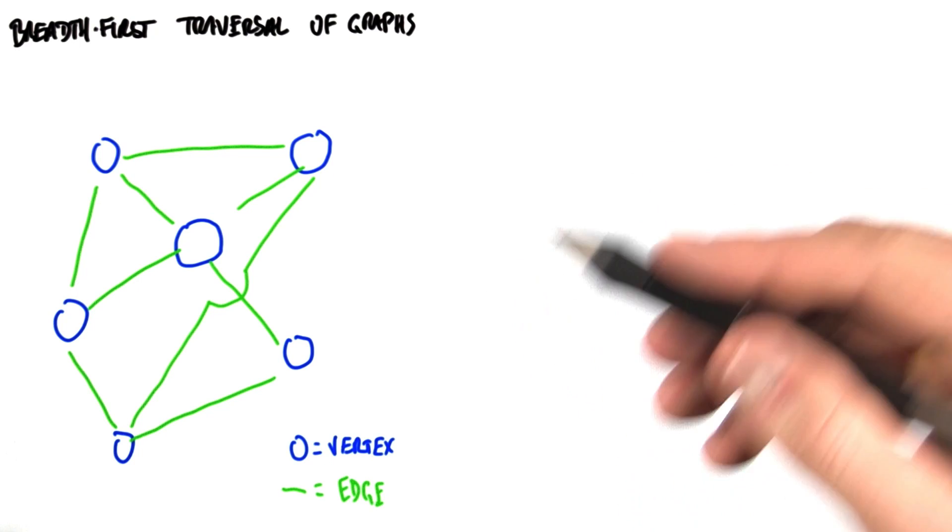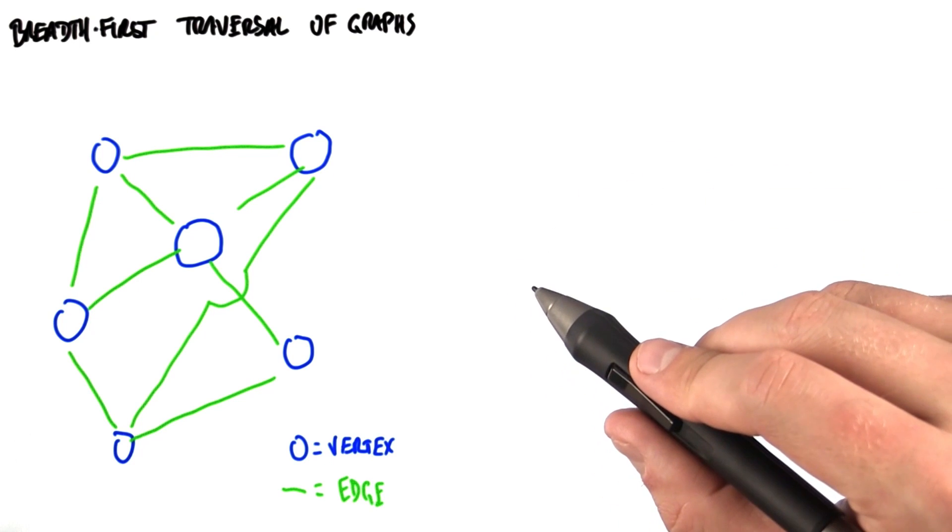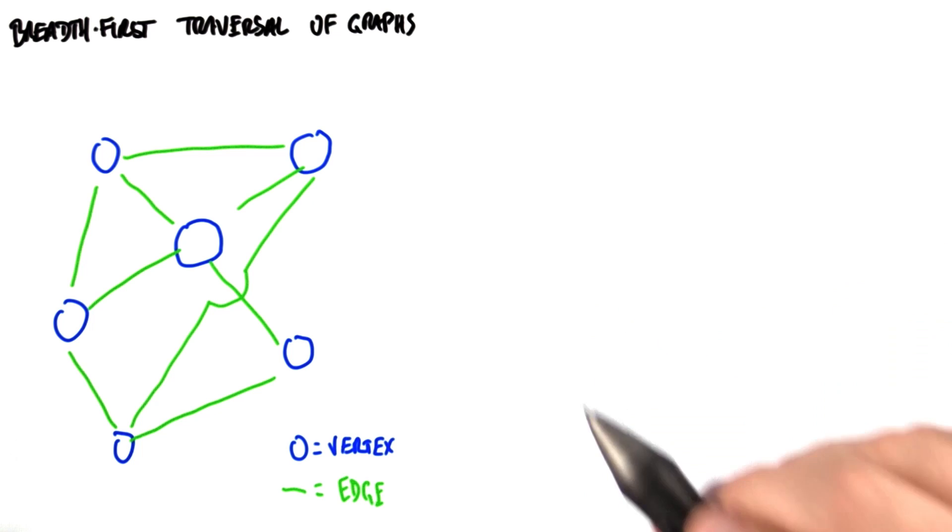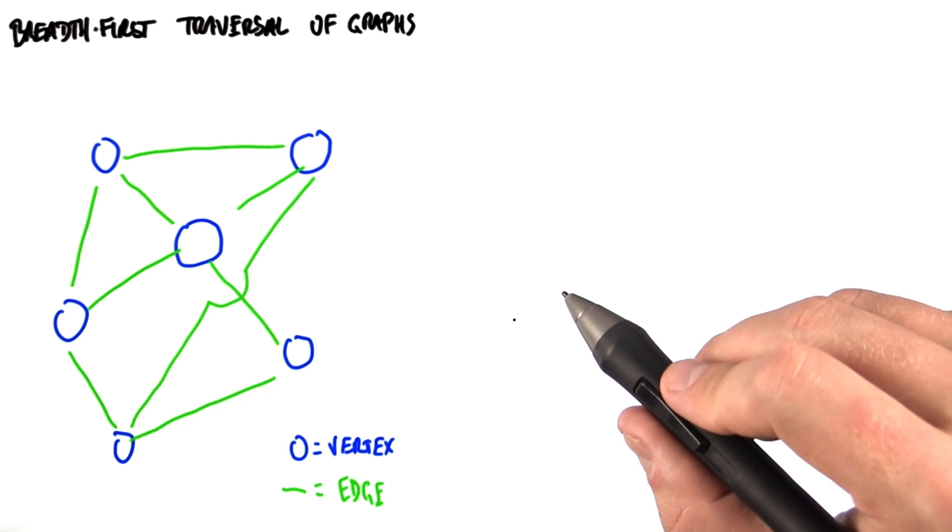Now we'll turn to another interesting problem where the choice of approach is crucial for good performance. This is the problem of graph traversal, specifically a breadth-first traversal of a graph. So let's define the terms that we're using here.